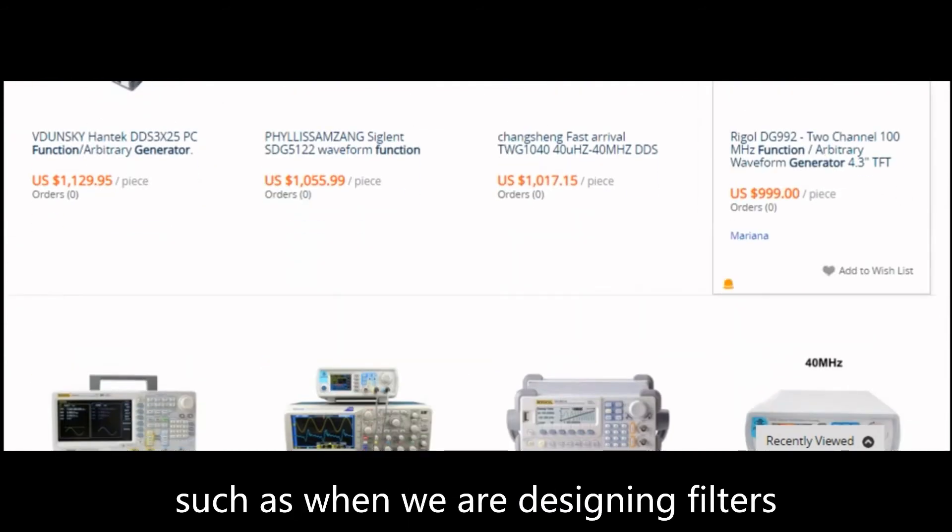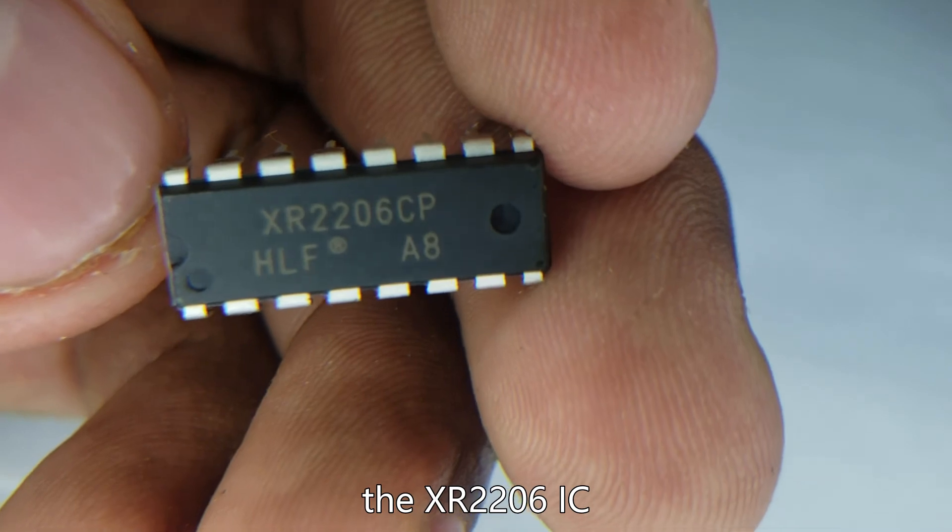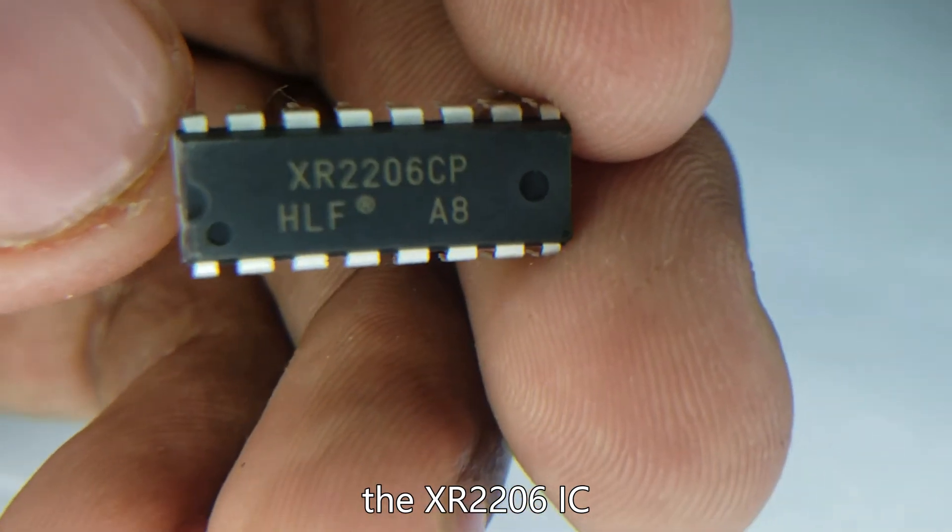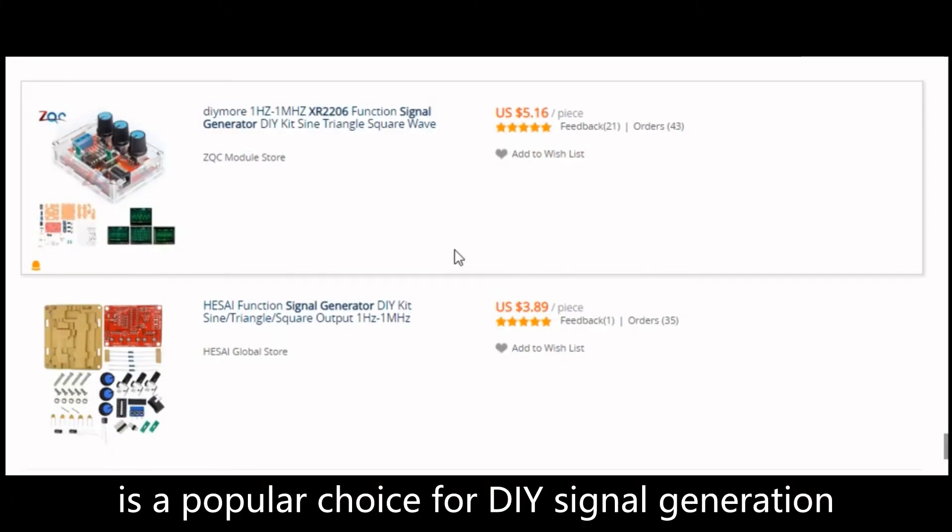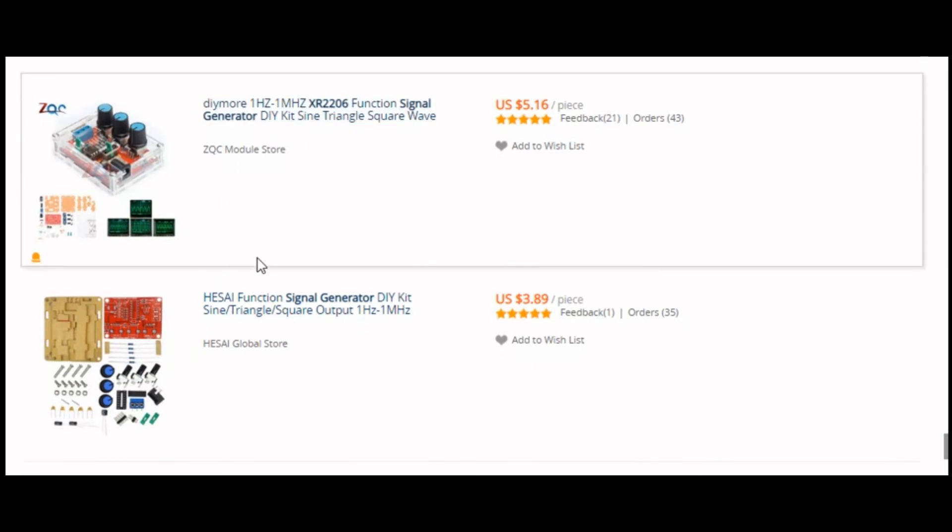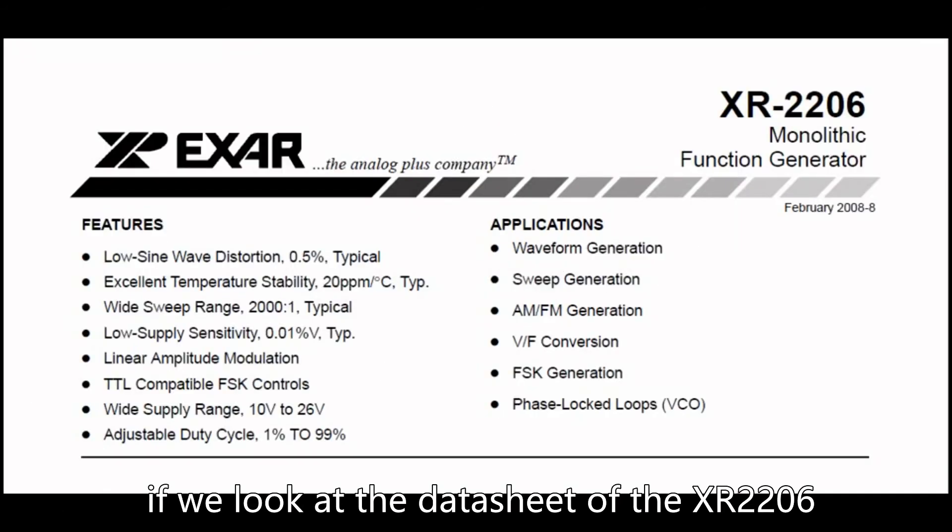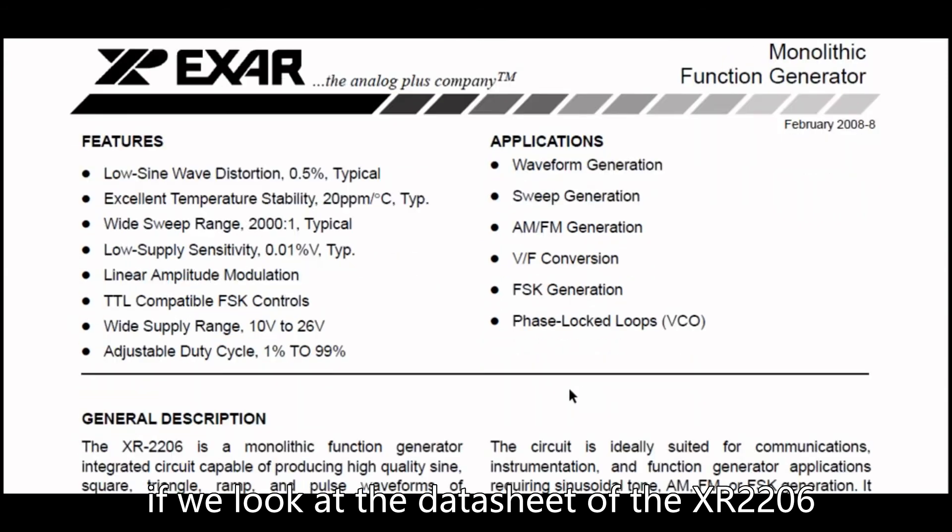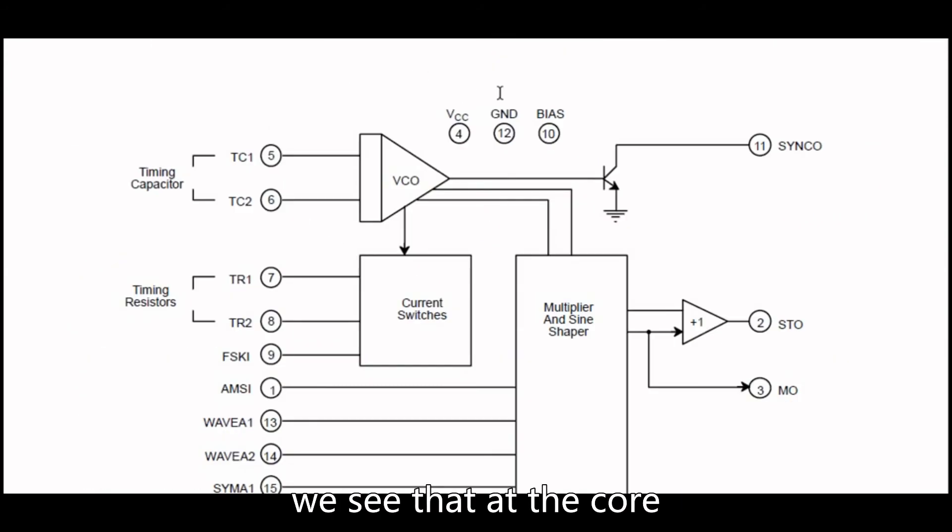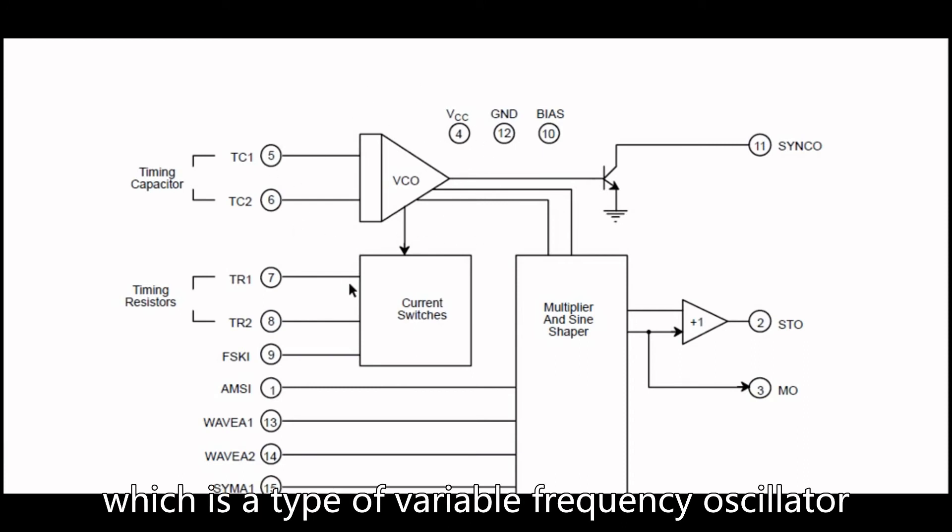The XR2206 IC is a popular choice for DIY signal generation and it can generate sine, square and triangle waves. If we look at the datasheet of the XR2206, we see that at the core is a voltage controlled oscillator, which is a type of variable frequency oscillator.